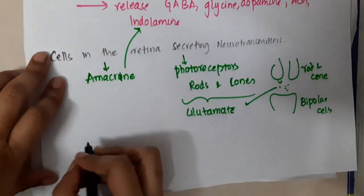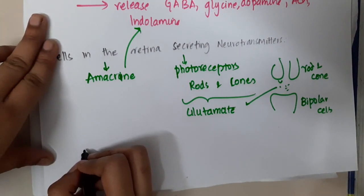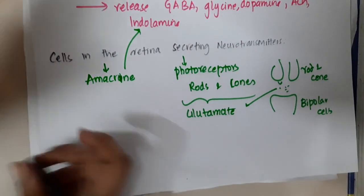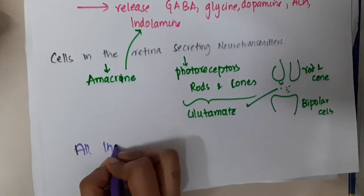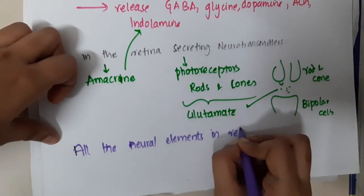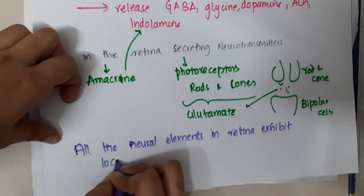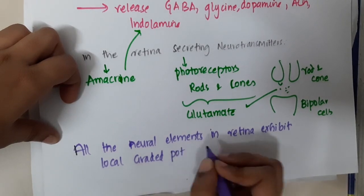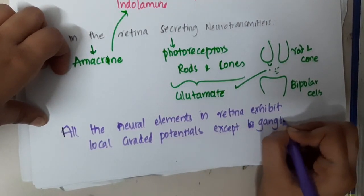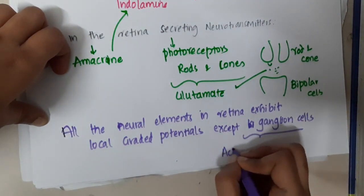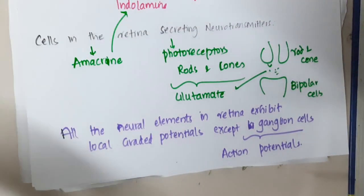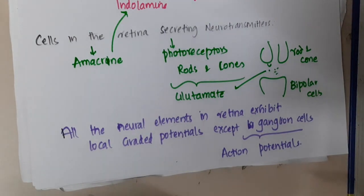One important one-liner: all neural elements in the retina will exhibit local graded potentials except the ganglion cells, which exhibit action potentials.